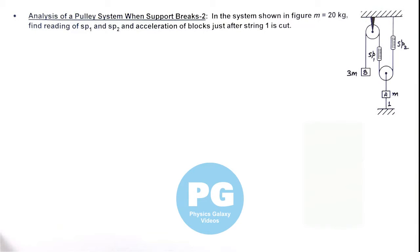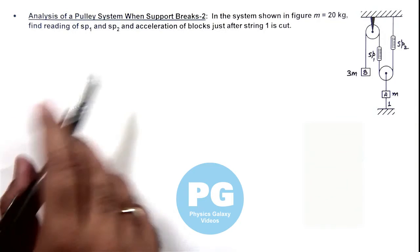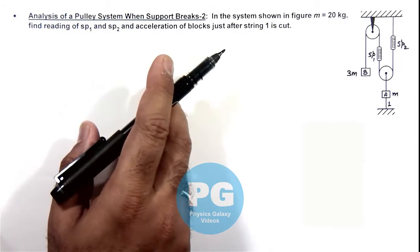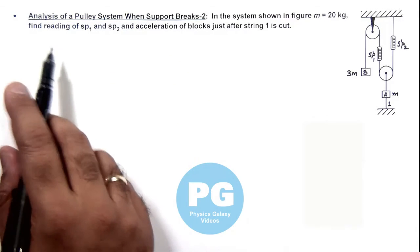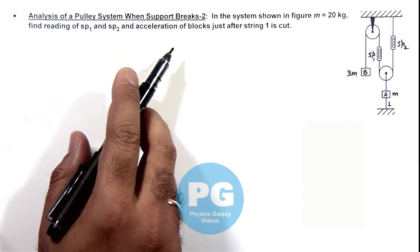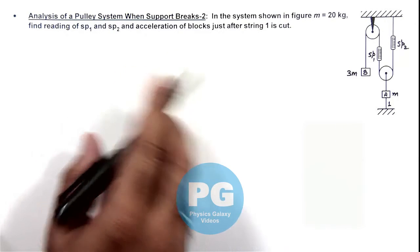In this illustration we'll analyze another pulley system when support breaks. Here we are given that in the system shown in figure, mass m is 20 kg, and we are required to find the reading of SP1 and SP2 and acceleration of blocks just after string 1 is cut.